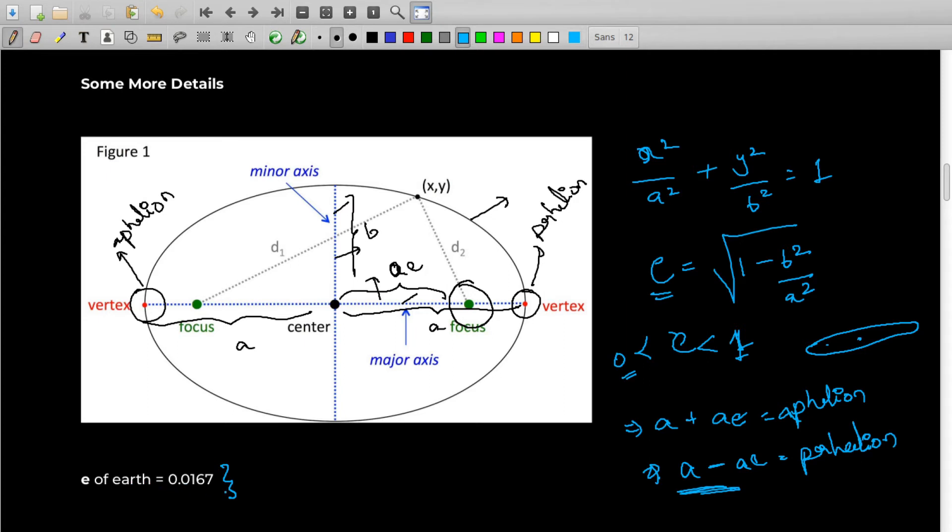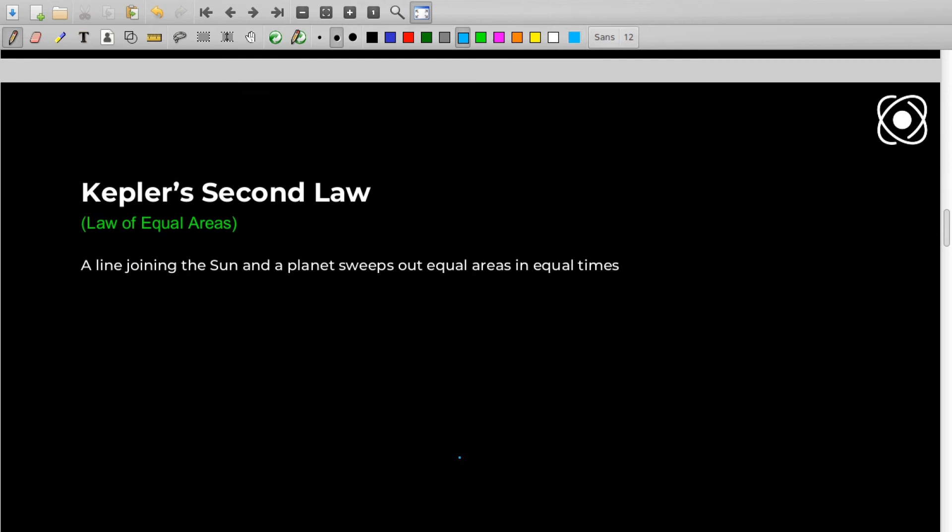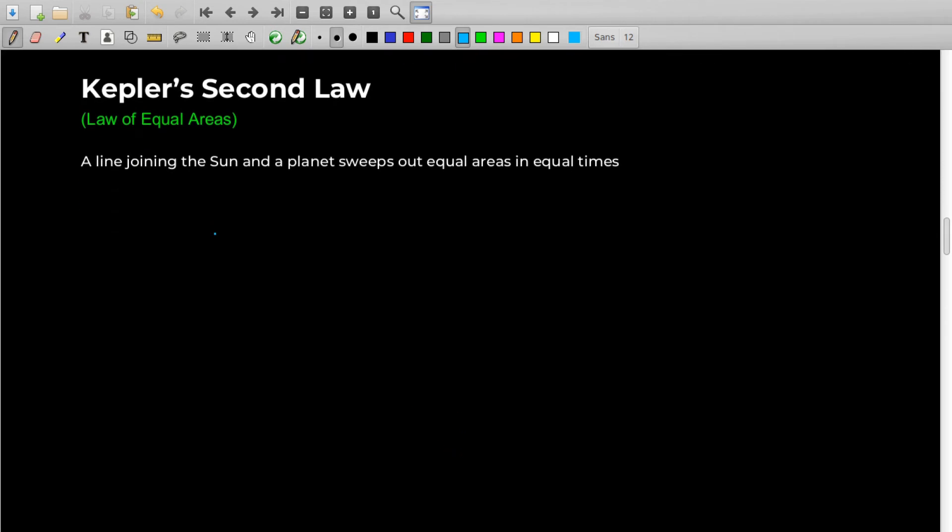The last point is that the eccentricity of planets in our solar system is really really low. For example, the eccentricity of Earth's orbit is 0.0167 only, which is closer to zero. That's why the astronomers before Kepler thought that the orbits of all the planets are circular, not elliptical.